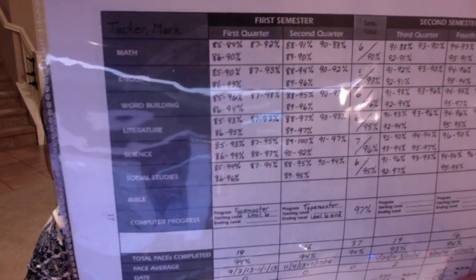They also have a progress report — you write in the percentage for each subject. They have a scope and sequence you can find for all grades from kindergarten through 12th grade for every subject, so you can see exactly what's covered.